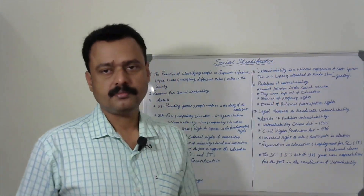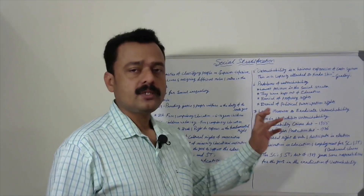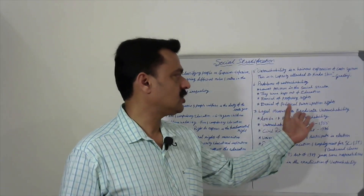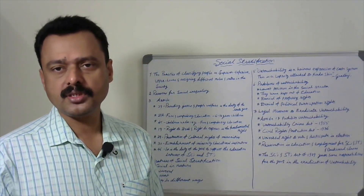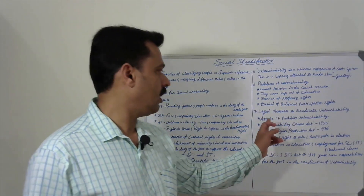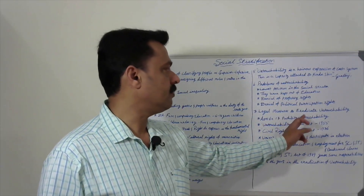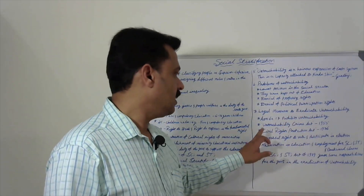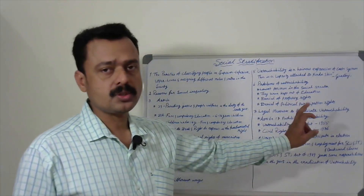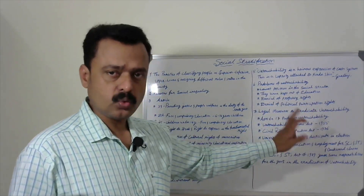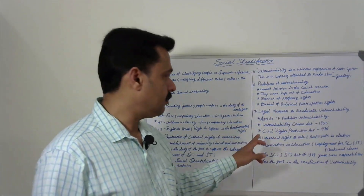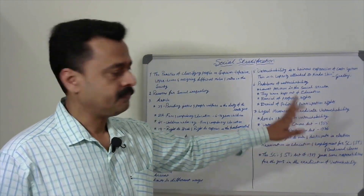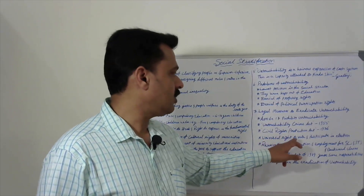What are the legal measures to eradicate untouchability? Article 17 of the Indian Constitution prohibits untouchability. The Untouchability Crime Act was passed in 1955. The same act was amended and brought as the Civil Rights Protection Act in 1976.